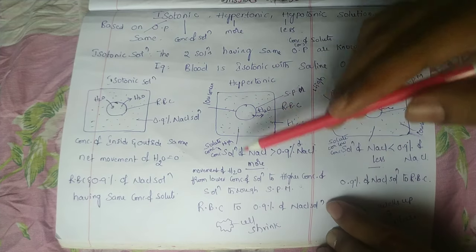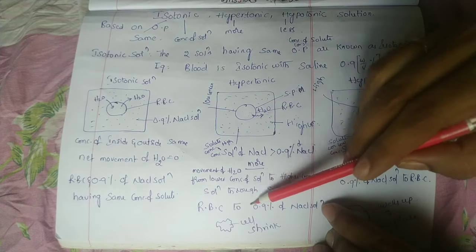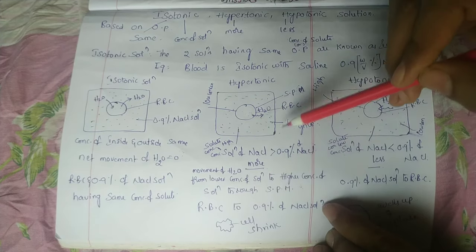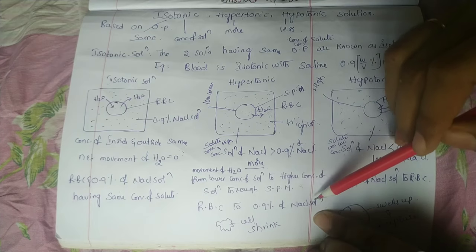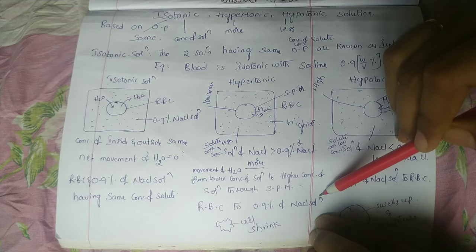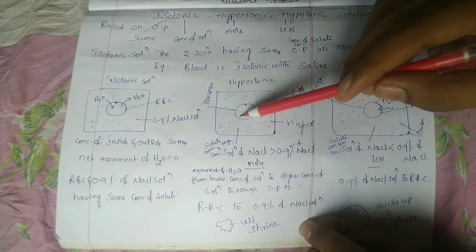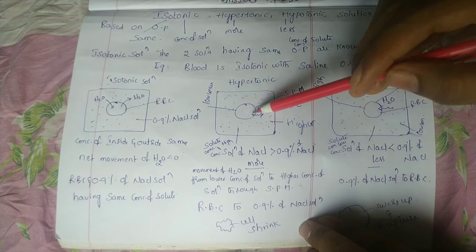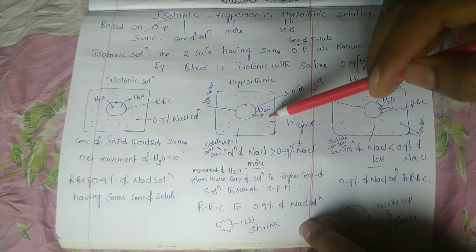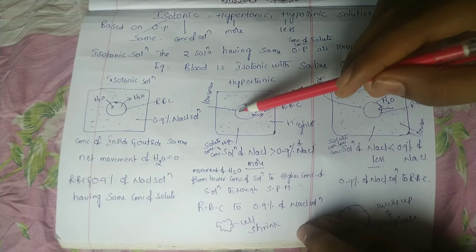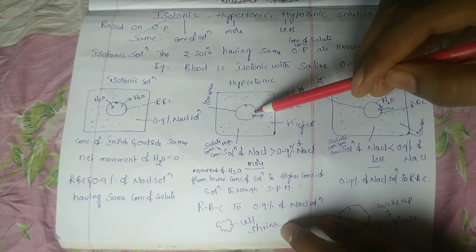Water molecules ekkani chakadki jarukindi - RBC to 0.9 percentage of NaCl solution lo ki jarukindi. Dini valla RBC cell water emi nai dhi baitu ko chesindi kada. A cell ane dhi shrink aindi - the cell shrinks.